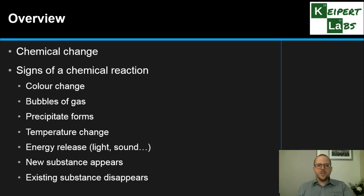Looking at a colour change, the formation of bubbles of gas, a precipitate or an insoluble solid that forms, temperature changes, the energy release of things like light or sound energy, and also the appearance of a new substance or the disappearance of an existing substance. We're going to go through each one of these in turn to illustrate how that might tell us about chemical change.